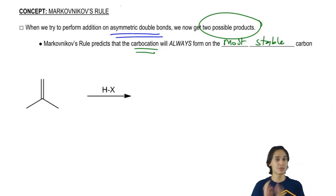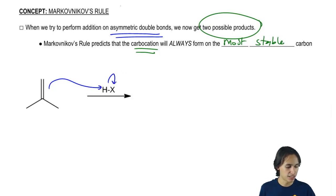So let's go ahead and check out this asymmetric double bond and see what our options are. Once again, I'm going to take the electrons from my double bond, I'm going to attack the H and I'm going to kick out the X.